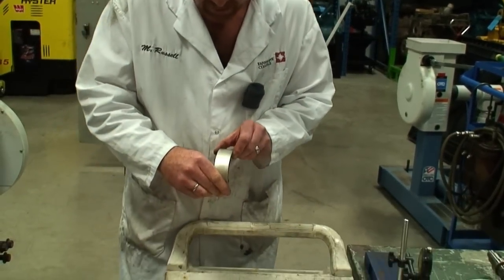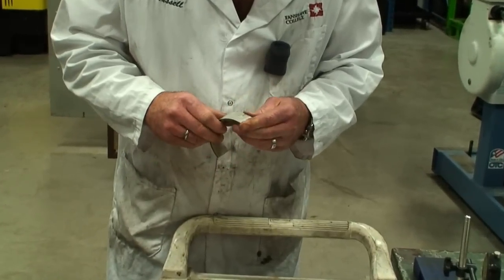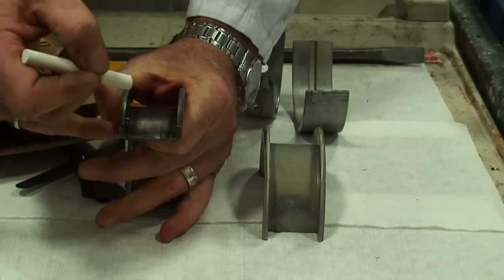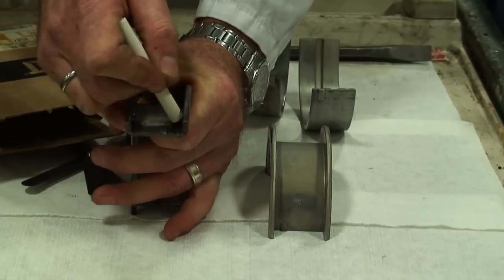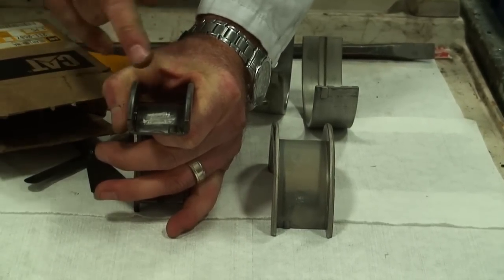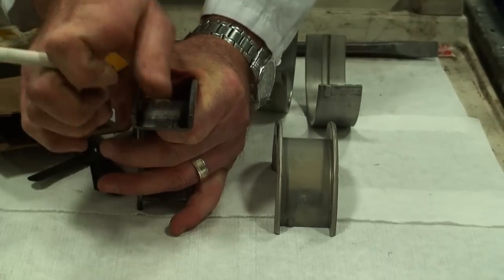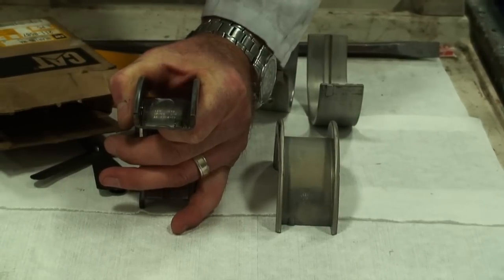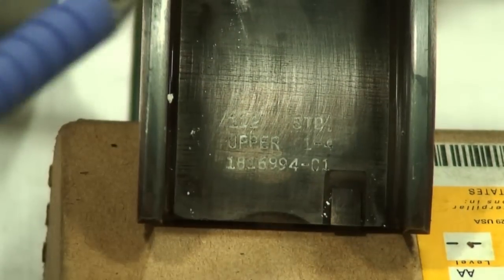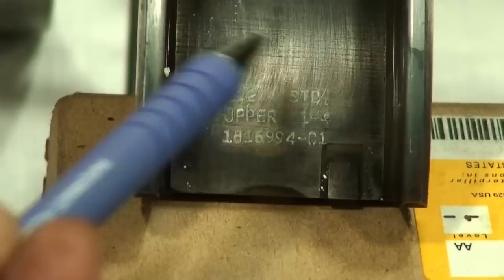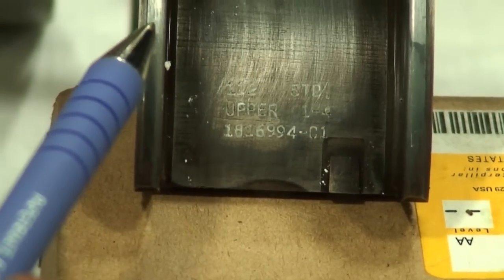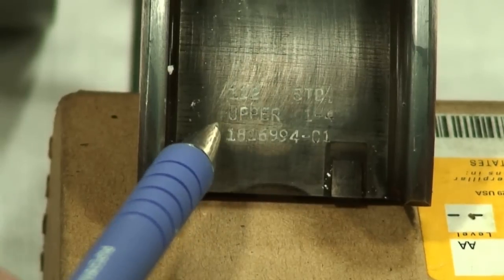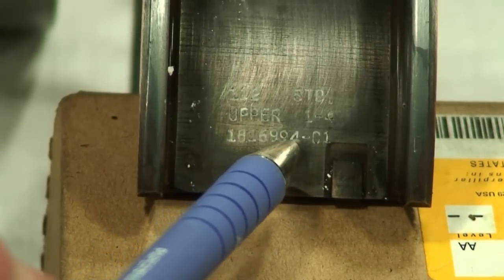If we take a look at the next thing on the bearing is identifying the bearing through a part number. So to bring the numbers to light here, I'm just going to use some chalk and go over top of the numbers and then wipe off the excess. Now we can closely look at the bearing identifying numbers to determine what bearing we need to put back into the engine.